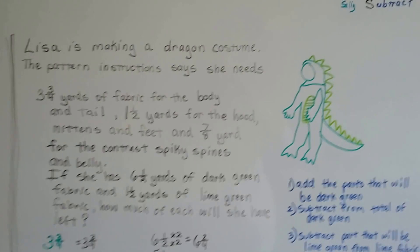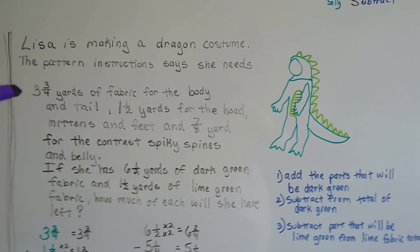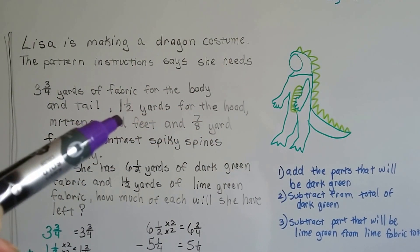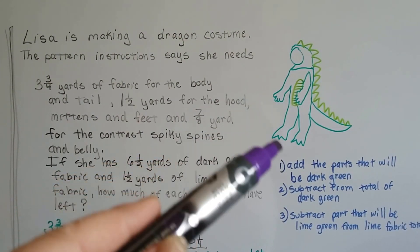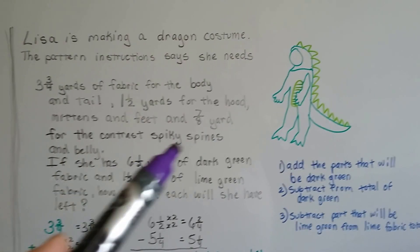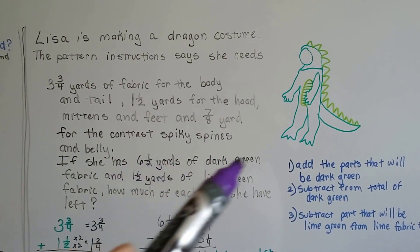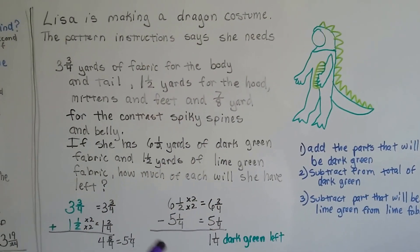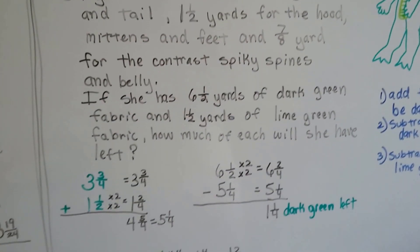Lisa is making a dragon costume. The pattern says she needs three and three-fourths yards of fabric for the body and tail, one and a half yards for the hood, mittens, and feet, and seven-eighths yards for the contrast spiky spines and belly area. She has six and a half yards of dark green and one and a half yards of lime green. How much fabric will she have left of each when she's finished?